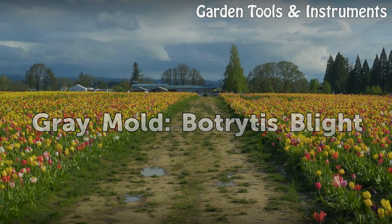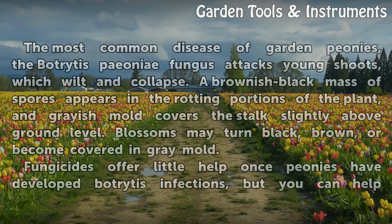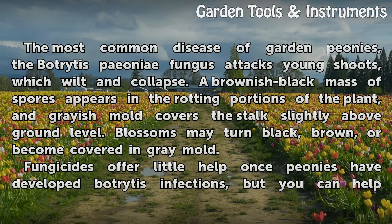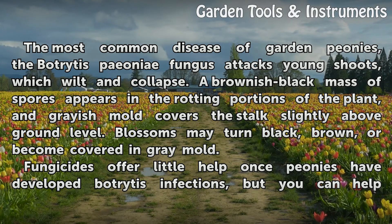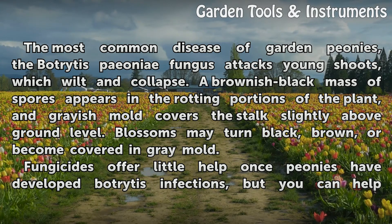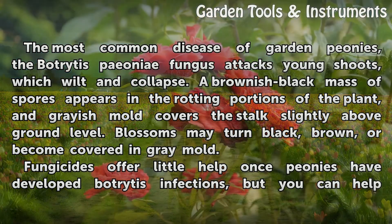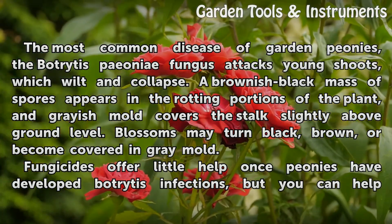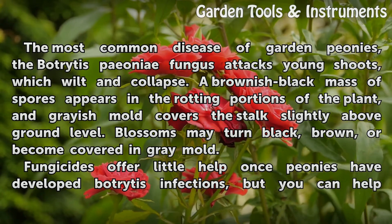Grey Mold, Botrytis Blight. The most common disease of garden peonies, the Botrytis paeonia fungus attacks young shoots, which wilt and collapse. A brownish-black mass of spores appears in the rotting portions of the plant, and grayish mold covers the stalk slightly above ground level. Blossoms may turn black, brown, or become covered in gray mold.